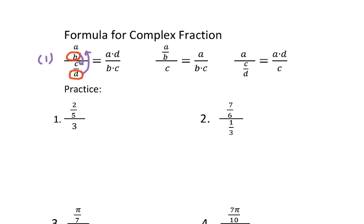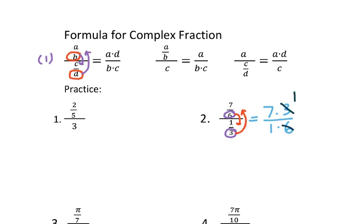Let's do number two. From this complex fraction, figure out the longest division line first. Above the longest division line, I found six — that's the denominator. Below the longest division line, I found three — that's the denominator. Make three jump up and six drop down. You get seven times three and one times six. Then reduce: you have one and two, so your final answer will be seven over two.